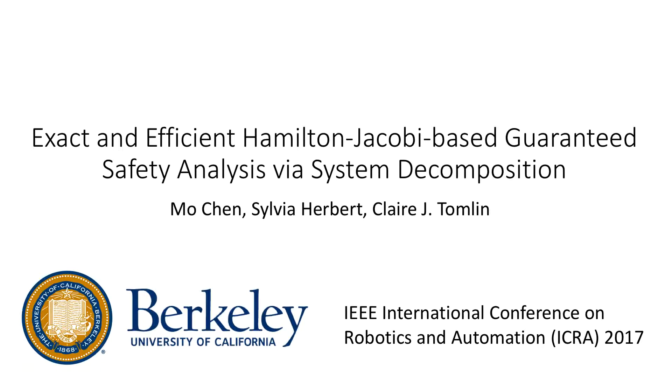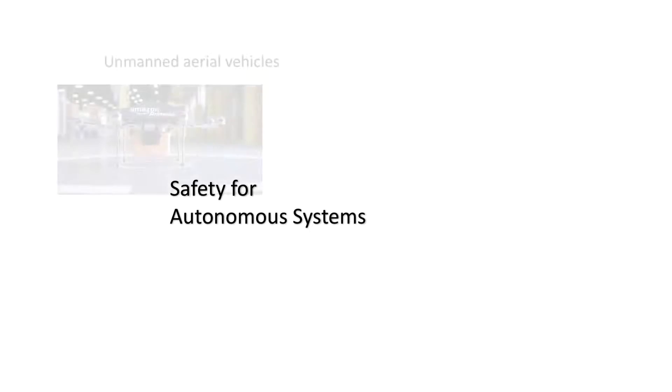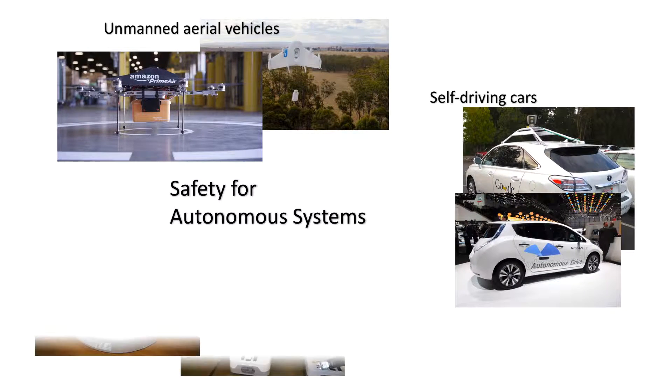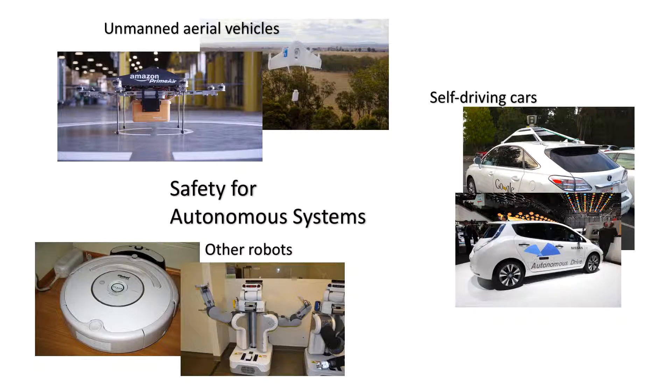This video introduces a method for exact and efficient Hamilton-Jacobi-based guaranteed safety analysis via system decomposition. As the use of autonomous systems has increased rapidly, so is the need for verification of these systems in safety-critical scenarios.